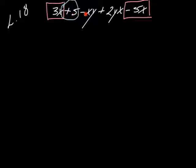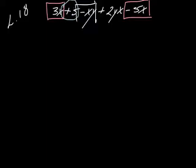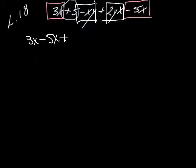I've got a plus 5. Do I have any other terms that just have numbers and no letters? No, so that's the only one. Now I look at my minus XY and the 2YX — same letters, and we don't care what order they're in because it's multiplication, order doesn't matter. So I'm going to square those two with white. So I've got my reds together: 3X minus 5X, my blue one: plus 5, and my white ones: minus XY plus 2YX.